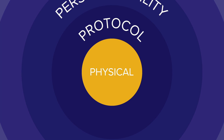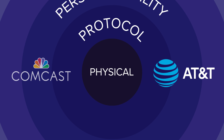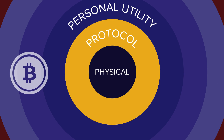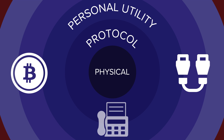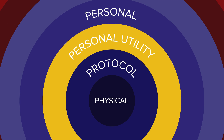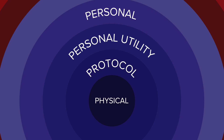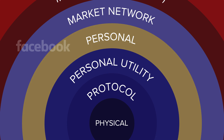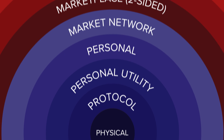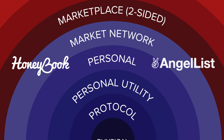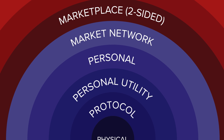Physicals are at the center — think of Comcast or AT&T with actual physical nodes in the network. Protocol is next, think of Bitcoin or Ethernet or fax. Personal Utility is next, where you actually get utility from the network — things like Facebook Messenger and WhatsApp. Then there's personal network effects, more like Facebook or Twitter. Then you look at market networks, things like HoneyBook or AngelList, where people are adding value to each other for the purpose of transactions.